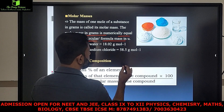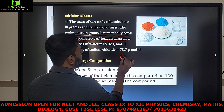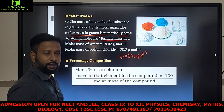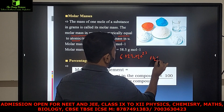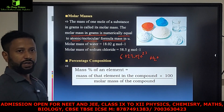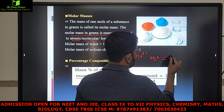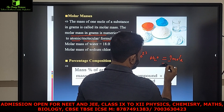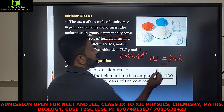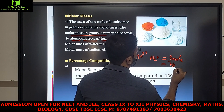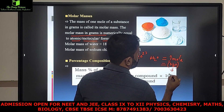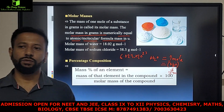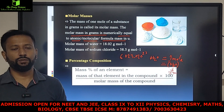For example, 6.023 × 10²³ number of particles in water — the number of H₂O molecules is equal to one mole. One molar weight of water is equivalent to 18 grams.